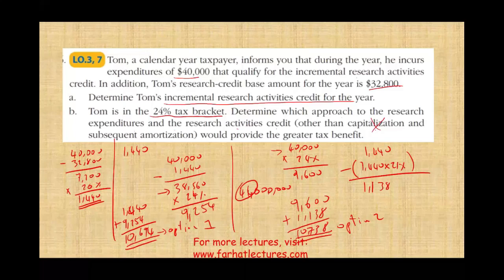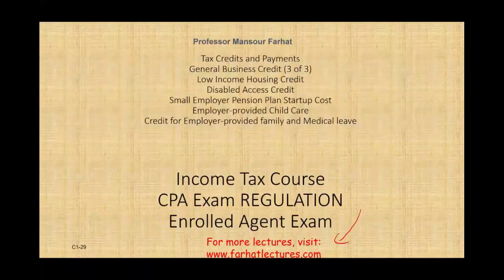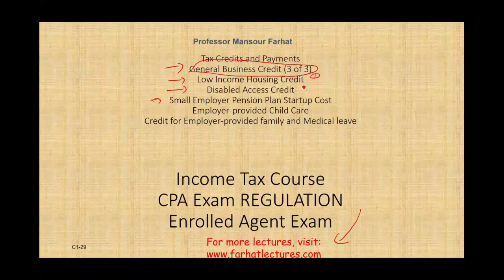I hope this recording emphasized the research activities credit for you. The key point is you have many options when it comes to research expenditures: you can expense, capitalize, or defer, and use the credit in conjunction with those options. Note that all these options will be available through 2021 — going forward from there, you'll have to capitalize and amortize, so your options will be more limited. If you have any questions, please email me. In the next session, we'll look at additional general business credits. Good luck, study hard, and see you on the other side.